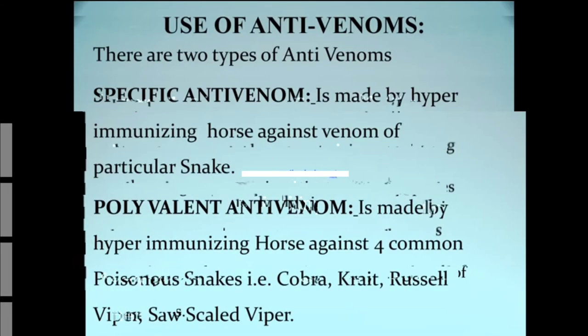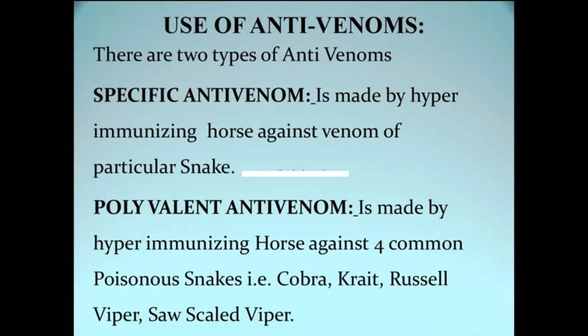There are two types of anti-snake venom: specific and polyvalent. Specific anti-venom is made by hyperimmunizing a horse against one particular snake type. Polyvalent anti-venom is made by hyperimmunizing horses against four common poisonous snakes — in our setup: cobra, krait, Russell viper, and saw-scaled viper. If you know the patient was bitten by a cobra, you can use specific anti-venom, though it is not commonly available. If you are unsure which snake was involved and the patient shows moderate or severe envenomation, start polyvalent anti-venom, which covers all four common snakes.